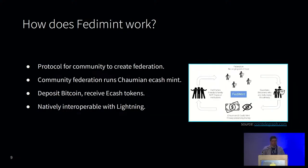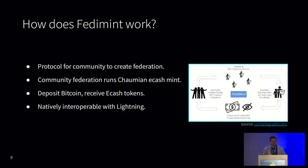How does FediMint work? FediMint is a protocol that allows communities to create their own federations. These federations run a Chaumian eCash mint, and invited users can join the FediMint, send their Bitcoin to the federation, and receive private eCash notes redeemable for that Bitcoin. They are bearer tokens and can be sent directly between members of the FediMint or redeemed from the federation for Bitcoin. The federation can confirm when notes are redeemed without knowing who is redeeming them or what the values are, preventing double spending. FediMint is also natively interoperable with Lightning through a Lightning gateway.